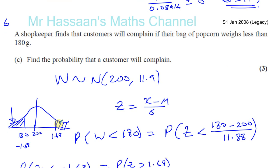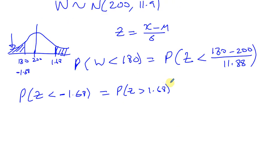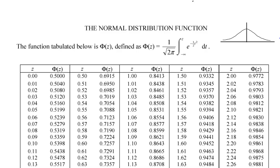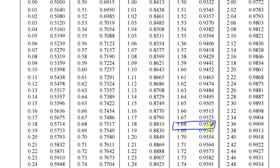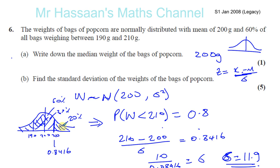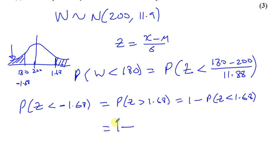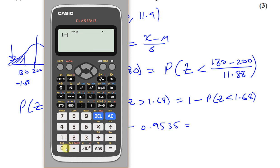That is equal to 1 minus the table value. For Z equals 1.68, we get 0.9535. So 1 take away 0.9535 gives us the answer 0.0465. So 0.0465 is the probability that customers would complain. And there we have our answer for this question.